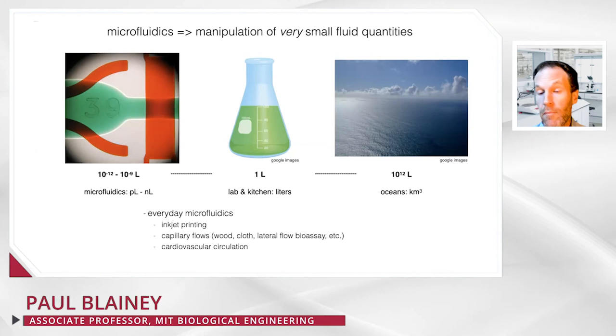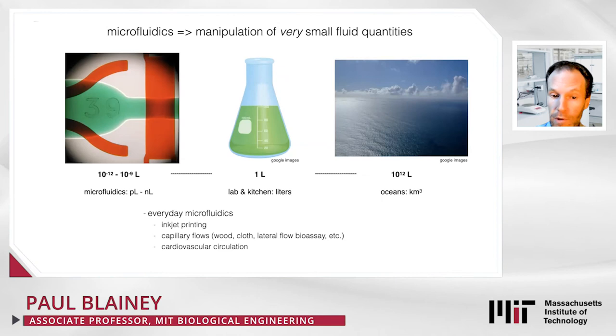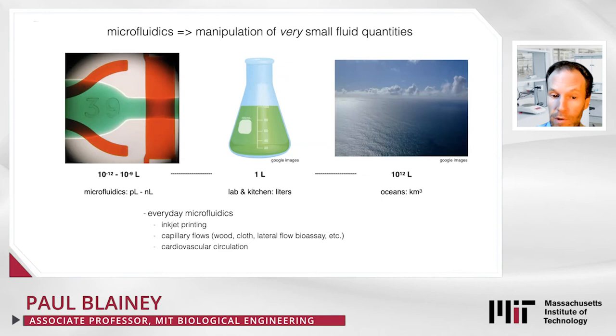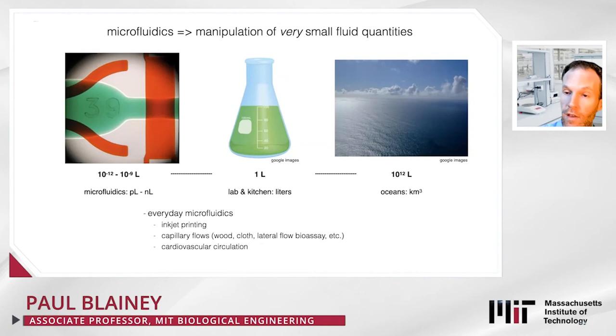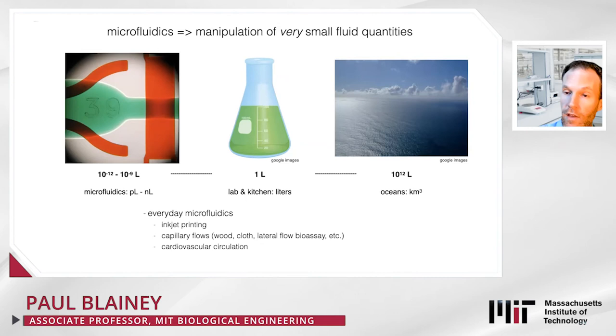Microfluidics also enters our common daily experience. For example, an inkjet printer is a pretty sophisticated microfluidic system that can eject nanoliter or smaller droplets of ink to form a printout. Capillary flows in materials like textiles are another example of nanoscopic microfluidic flows. And of course, as human beings, we ourselves are microfluidic systems — our cardiovascular circulation takes place certainly at a microfluidic scale.